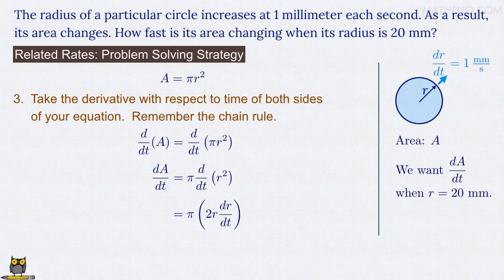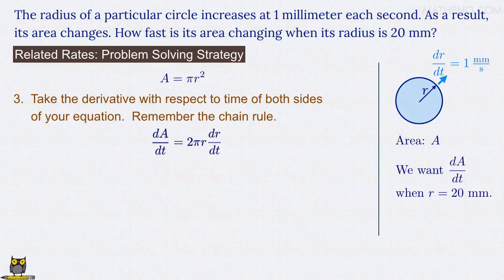Continuing on here, we can rearrange the terms on the right-hand side of the equation, so we have dA/dt equals 2 pi r times dr/dt. And that completes the third step of our problem-solving strategy, since we now have the relation between dA/dt and dr/dt that we need.